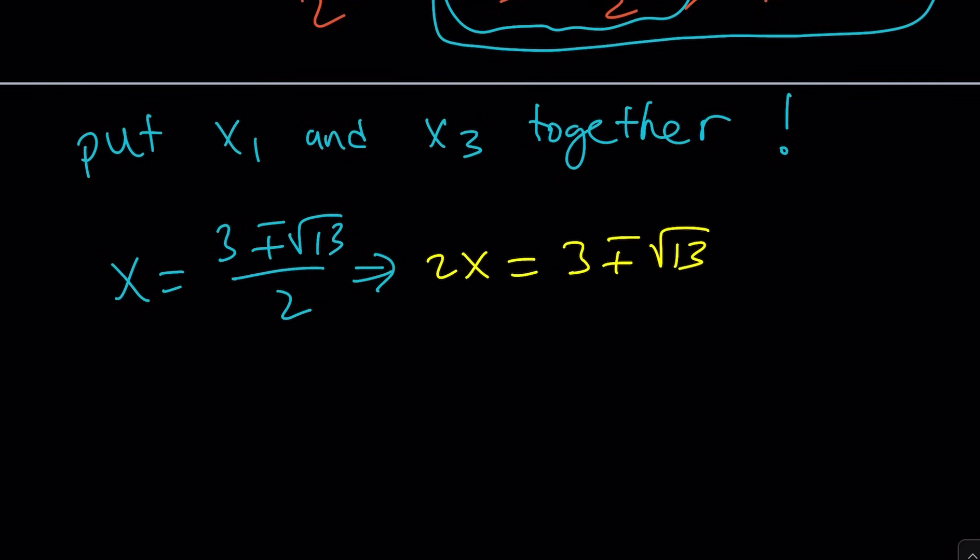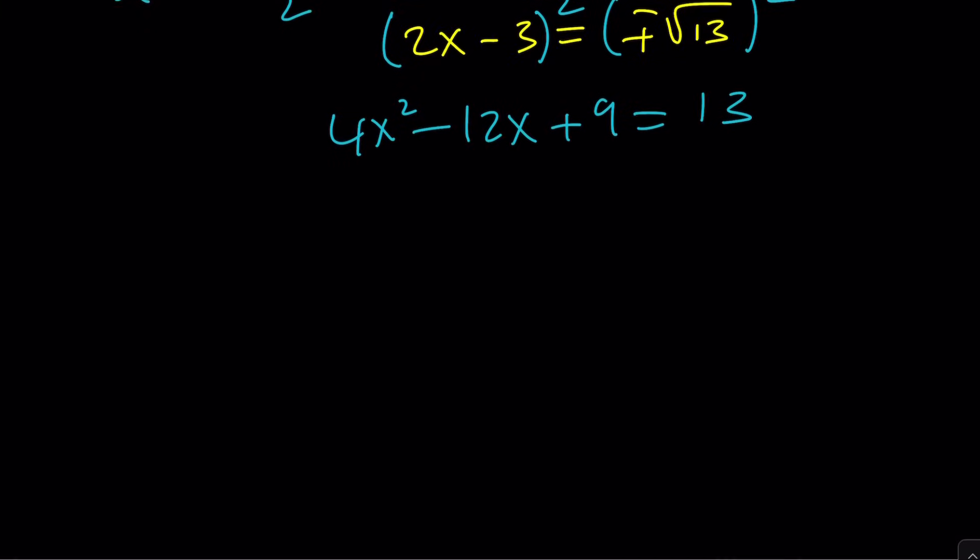And then square both sides. This is going to be fun, right? No. You're not going to square both sides. First of all, isolate the radical and then square both sides. Because it's more fun. And guess what? When you square plus minus, the plus minus is going to disappear. So you're going to get 4x squared minus 12x plus 9 equals 13. Plus minus doesn't matter here. Subtract 13. You're going to get 4x squared minus 12x minus 4 equals 0. And then divide everything by 4.